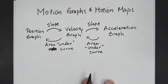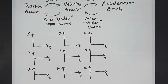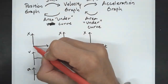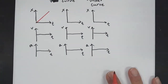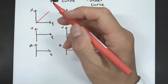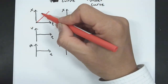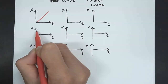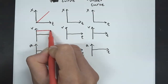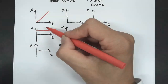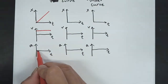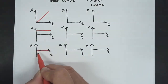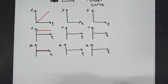Now let's look at some examples. We're going to start with a constant velocity graph — it's going to be a straight line. On a position graph, a straight line tells you it's moving at constant velocity. So the velocity graph will be a flat line, and it's positive velocity going away from the origin. The acceleration is zero because velocity is not changing — acceleration is defined as the rate at which velocity changes.